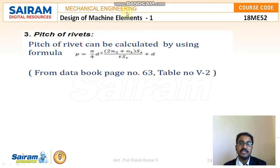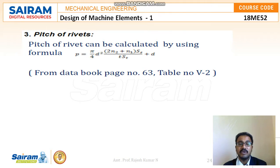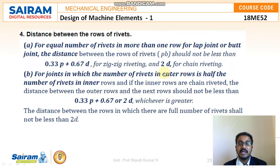The third step, which is very important, is the pitch of the rivets. The pitch can be calculated using the formula: p = (π/4 × D² × (2N2 + N1) × Ss) / (2t × St) + D, where D is the diameter of the rivet and all calculations use the rivet hole diameter. N1 and N2 are the number of rivets in respective rows. S is the gauge line distance — that is, the distance from the reference axis to the edge of the plate, also called the margin. These formulas and values are available in the design data handbook, page 63, table V2.